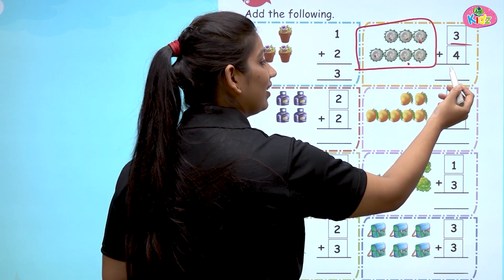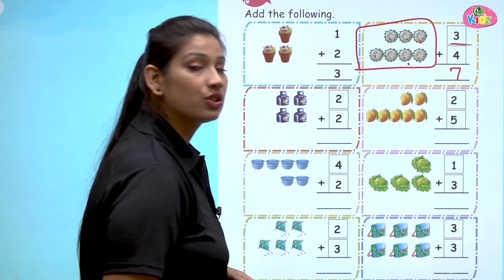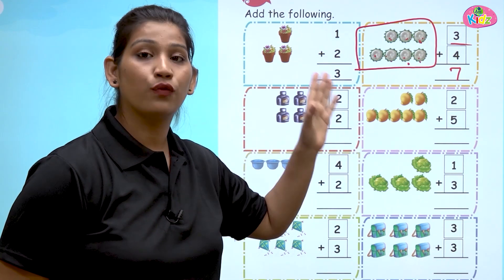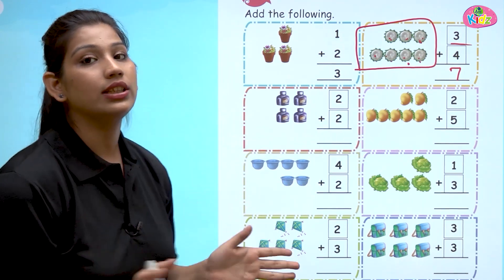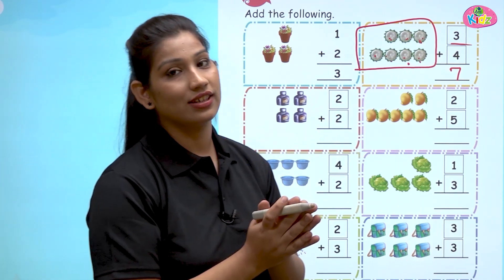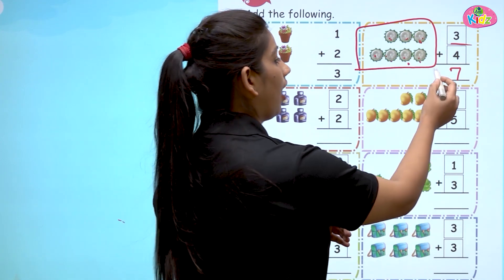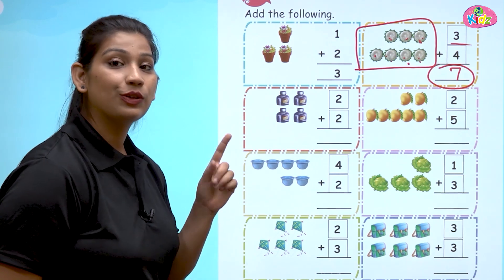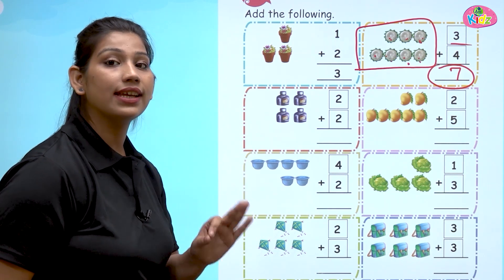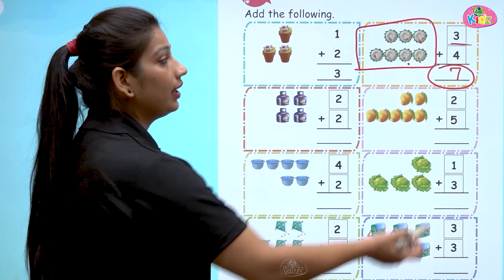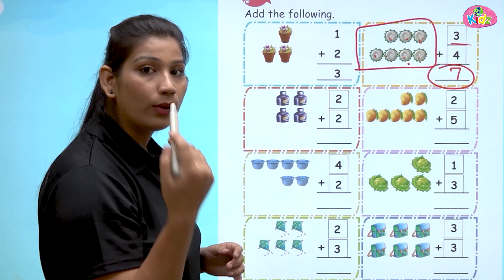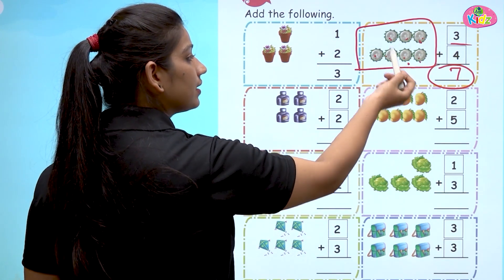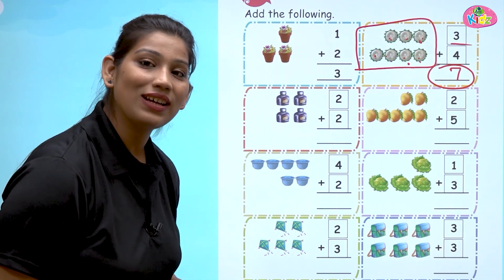Now count the total number of objects: one, two, three, four, five, six, seven. We have total seven. You have to count in the forward direction — yahan peh three ke aage se forward counting se count karna hai: four, five, six, seven — and you got seven.